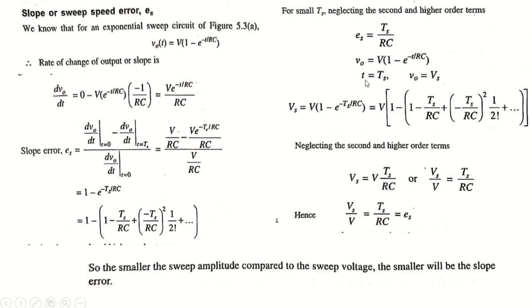In the output equation V0 = V × (1 − e^(−t/RC)), at t = TS the output reaches its maximum value VS. So VS = V × (1 − e^(−TS/RC)). Expanding in the infinite series and ignoring second-order and higher terms, we get VS = V × TS/RC, so VS/V = TS/RC. Since es = TS/RC, we conclude VS/V = TS/RC = es. Therefore, the smaller the sweep amplitude compared to the supply voltage, the smaller the slope error, and the signal will be more approximately linear.